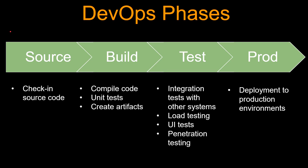These are the four phases in DevOps in the software development and deployment lifecycle. Source is when you check in your source code to a repository. Build is where the code is compiled, unit tests are done, and artifacts are created — examples of artifacts are a zip file for Lambda, a jar file, or a war file. Then the next phase is testing, where integration tests with other systems are done, load testing, UI tests, and penetration testing are done. And the next phase is prod, where your code is deployed to production environments.